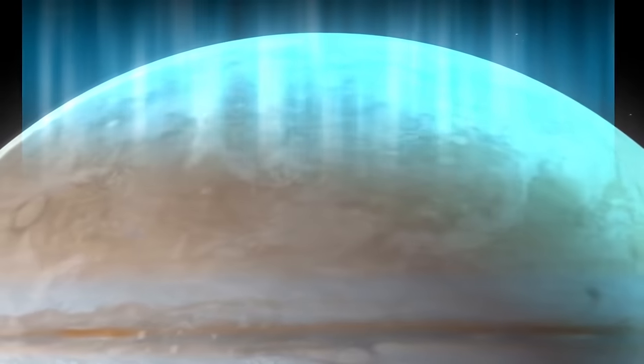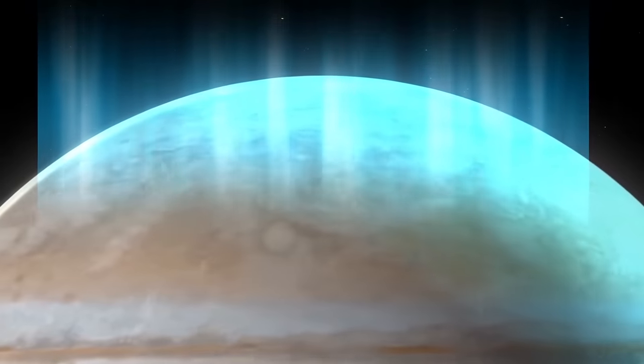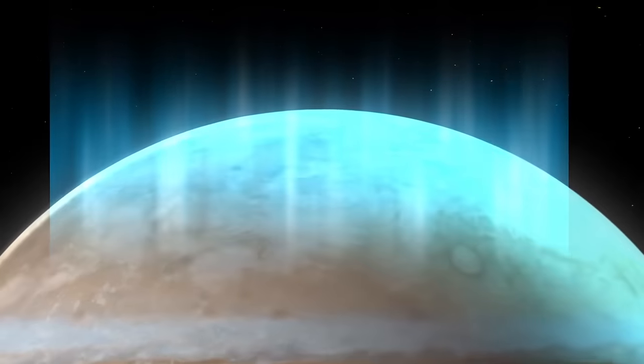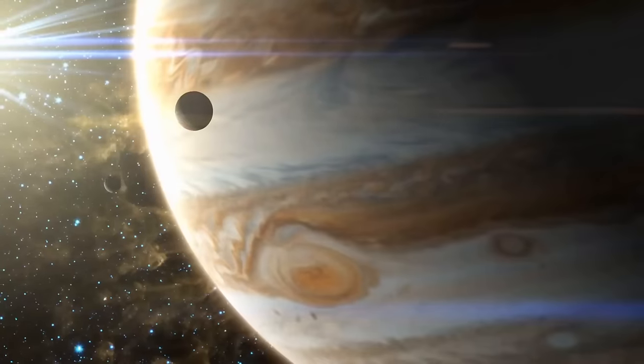These auroras are ancient. It makes the spot thousands of years old. And unlike the Great Red Spot, it's not stable. It keeps shape-shifting. And sometimes, it almost disappears. But it always returns to the upper atmosphere. Usually, it happens after a powerful auroral display.